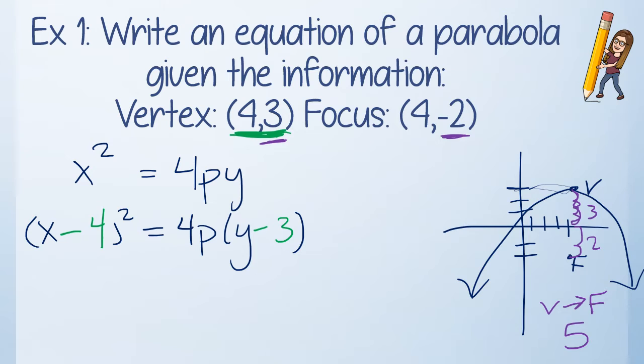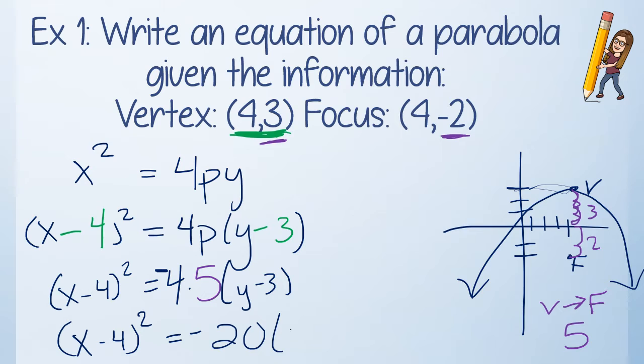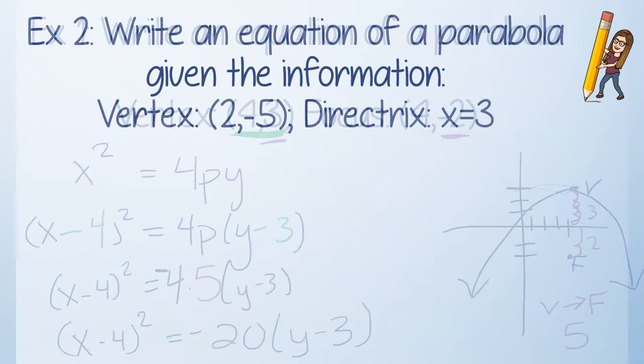Guess what? That's my p value. So instead of p, I'm going to put a 5. So that gets me a little bit further into my equation. I still have that 4. And there's one other little thing I got to think about. Is this parabola going up or down? Because of where my focus is located, it is going down. So my final equation should be, let's simplify this, (x - 4)² = -20(y - 3).